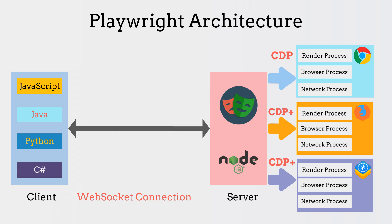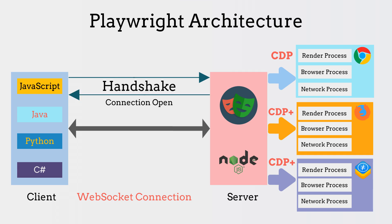A web socket connection is established by sending a request to the server from a client through a process called the web socket handshake. Web sockets have a much lower latency in terms of messages being sent to their clients due to the open connection, which is contrary to long polling where the connection has to be re-established with each request. Web sockets send the response as soon as it gets it, in real time.